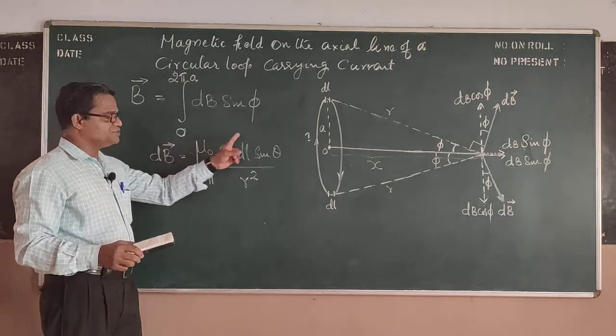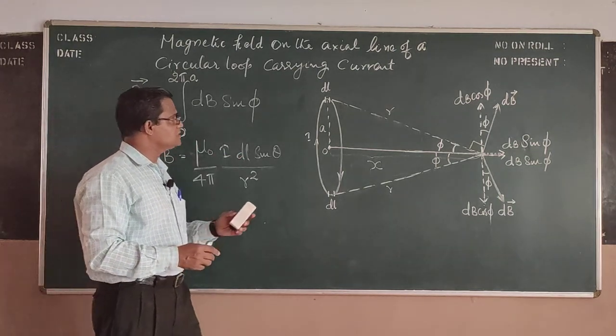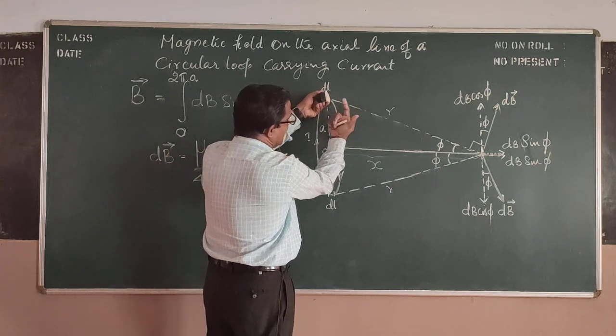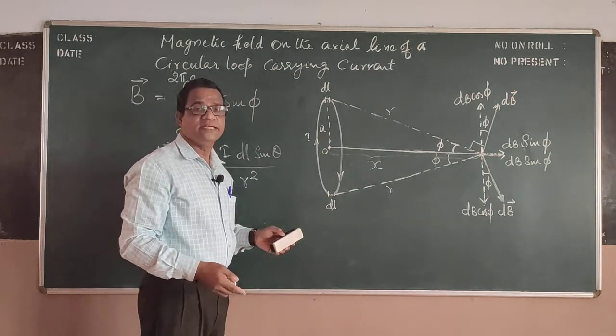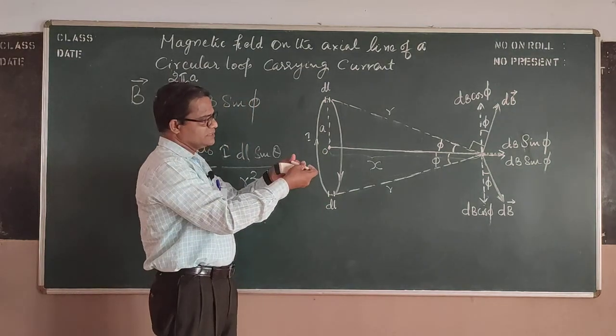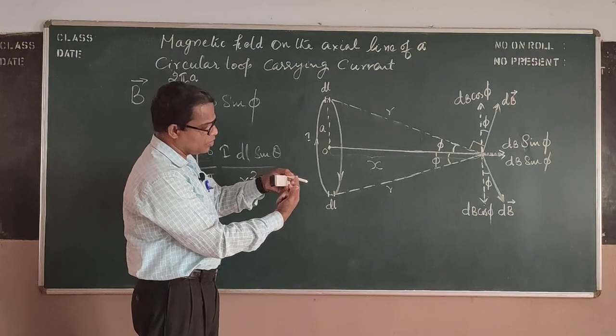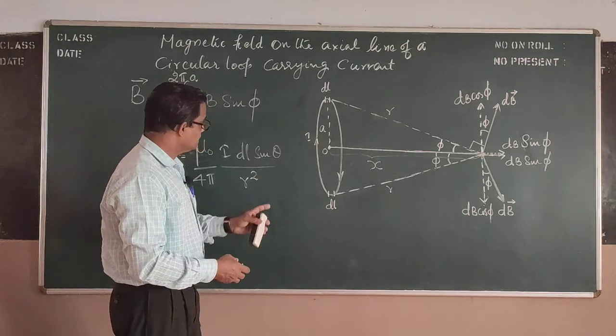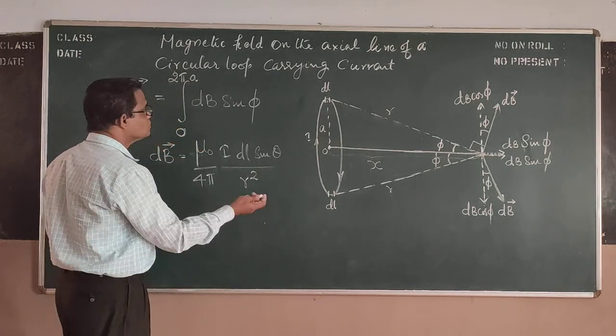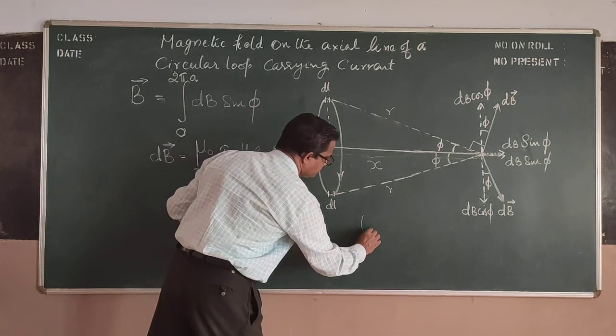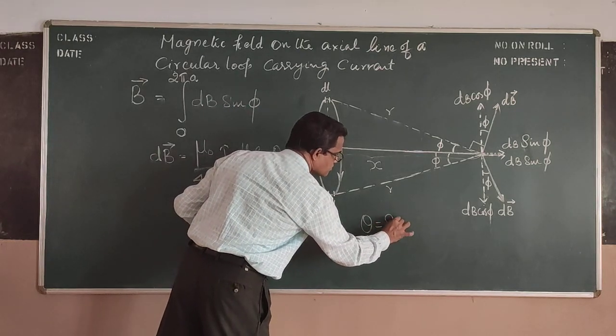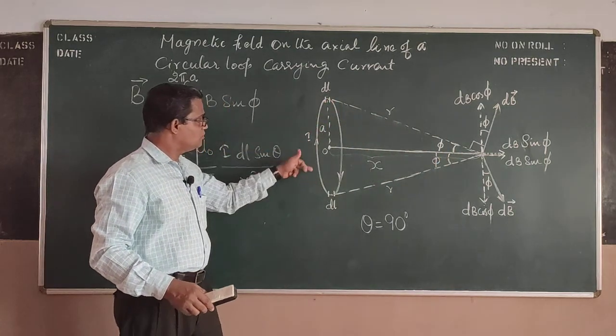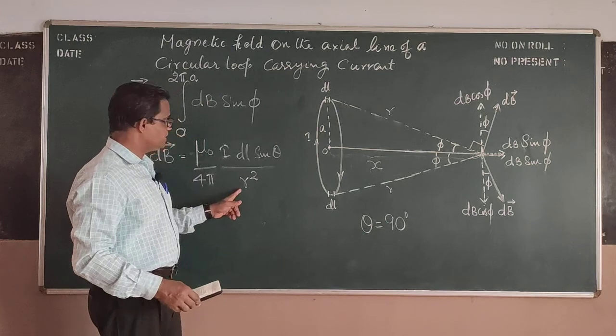But when you consider the direction of flow of current like this and the line joining like this, you can see the angle here will be always 90 degree. So this angle will be always 90 degree and as you take the region all around, that angle's nature will remain 90. So theta equal to 90 degree and distance to the point from all around the loop, that also remains same as this R.